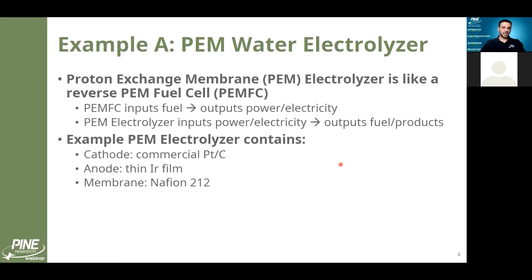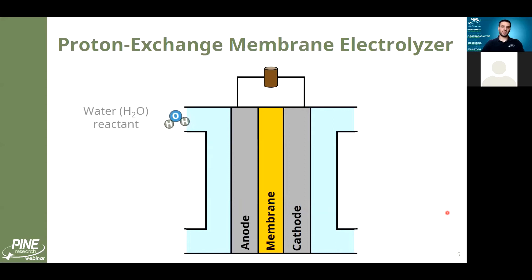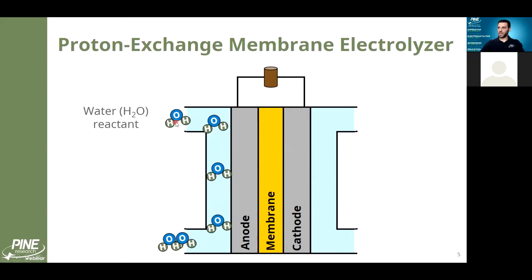The example electrolyzer has a commercial platinum-on-carbon catalyst at the cathode, a thin iridium film at the anode, and a commercial Nafion 212 membrane. This person submitted their data mainly wanting to know how to properly fit, or what model to use, for the low-frequency region. To illustrate how this electrolyzer works, here's a short animation: we have an anode-cathode-membrane construction with a gas or liquid flow region where water flows on the anode side as the reactant.